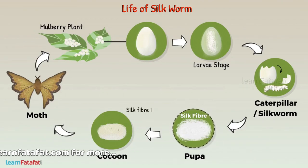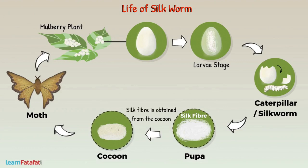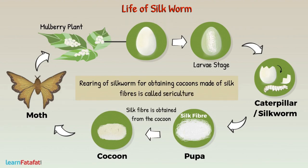The silkworm covers itself completely and enters the next stage of its life cycle called pupa. Silk fiber is obtained from the cocoon of the silkworm. The rearing of silkworms for obtaining cocoons made of silk fibers is called sericulture.